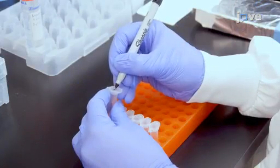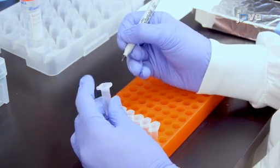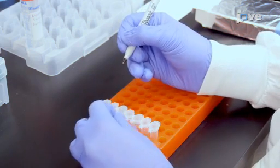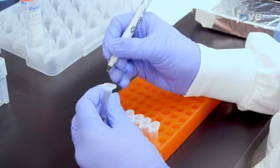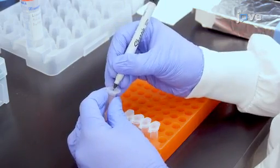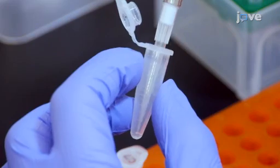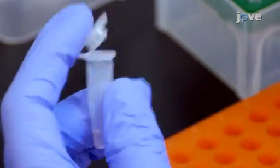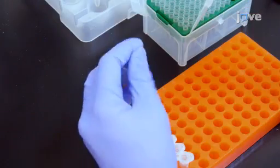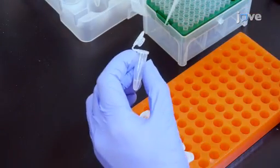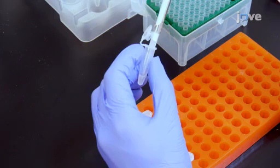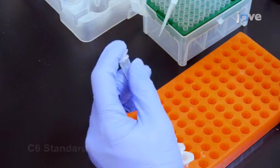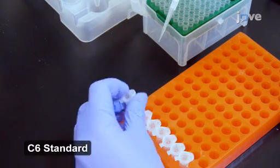Label six polypropylene microcentrifuge tubes as C1 through C6. Add 75 microliters of assay buffer to each of these tubes. Then transfer 25 microliters of the top standard C7 to the C6 tube and mix well by vortexing. This will be the C6 standard.